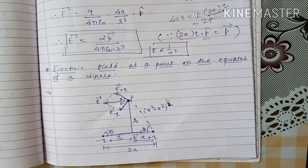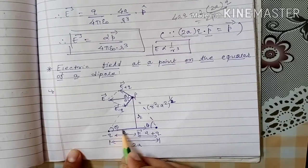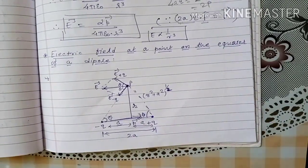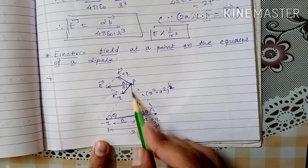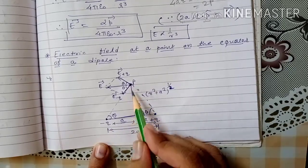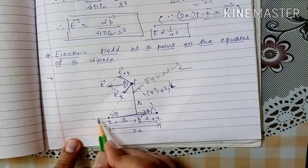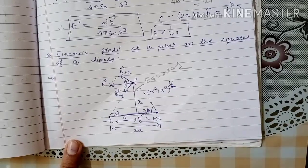Another important theory: electric field at a point on the equator of a dipole. The perpendicular bisector to the line joining the two electric charges of the dipole is called the equator of the dipole. A perpendicular drawn from the center of the axis is the equator. There can be infinitely many equatorial lines for a dipole.